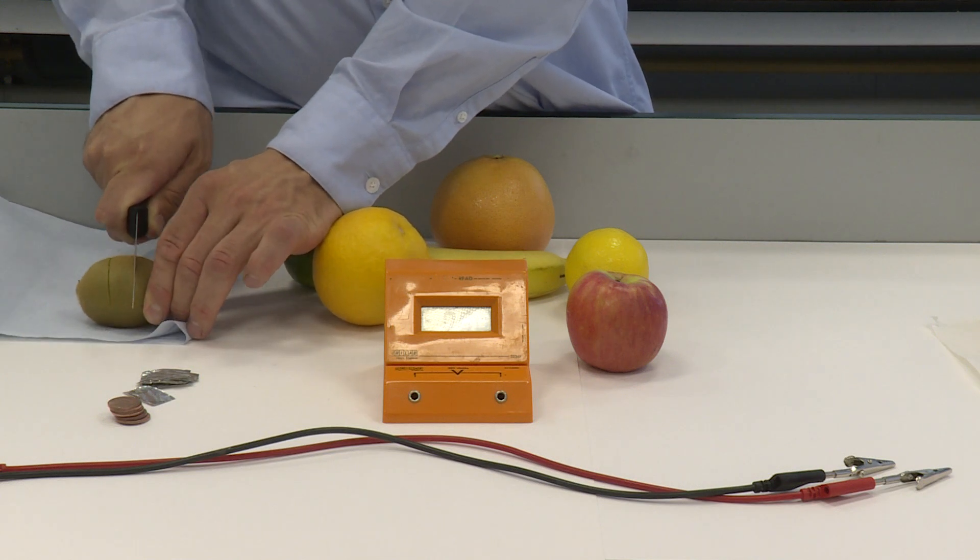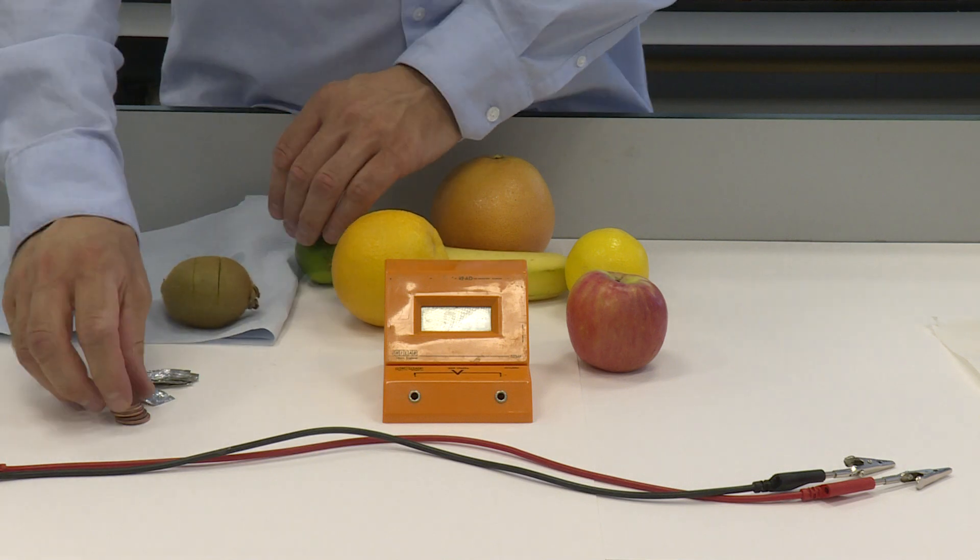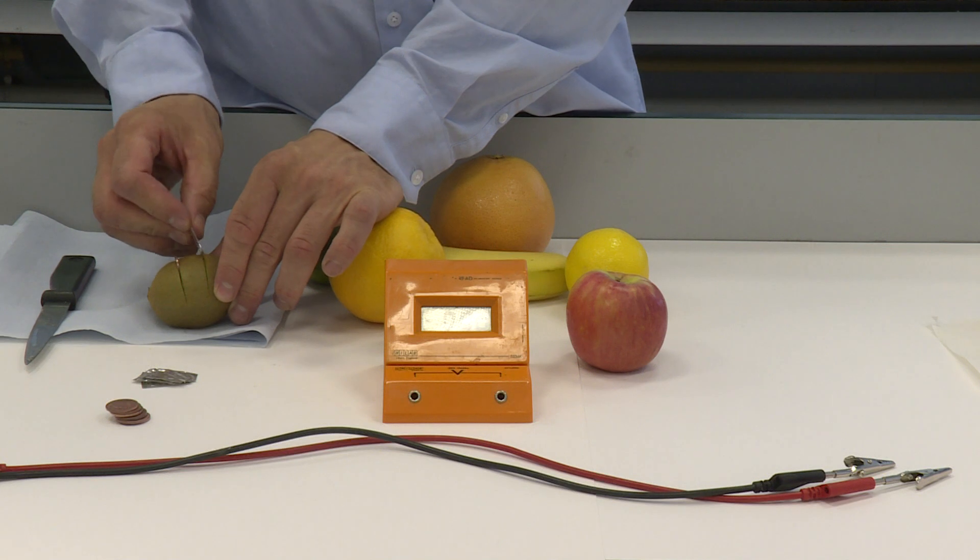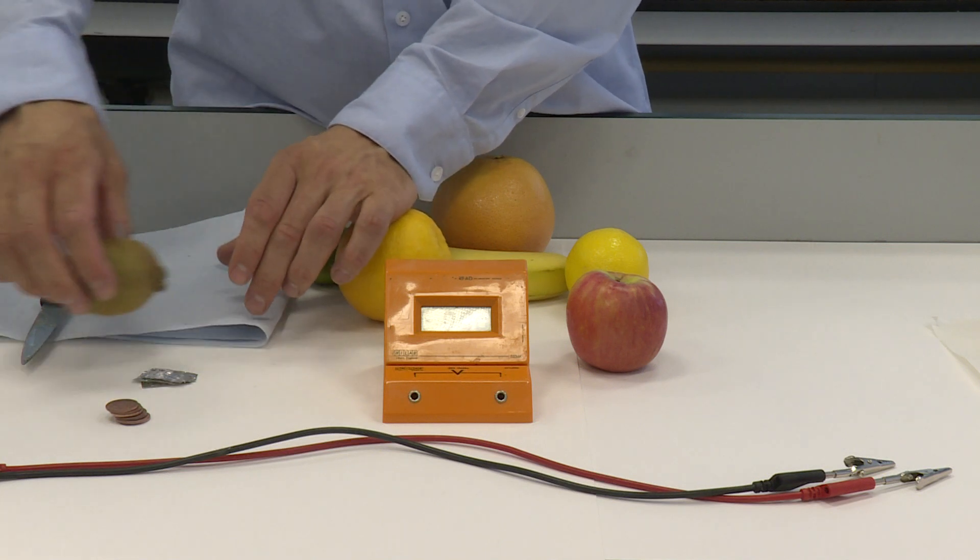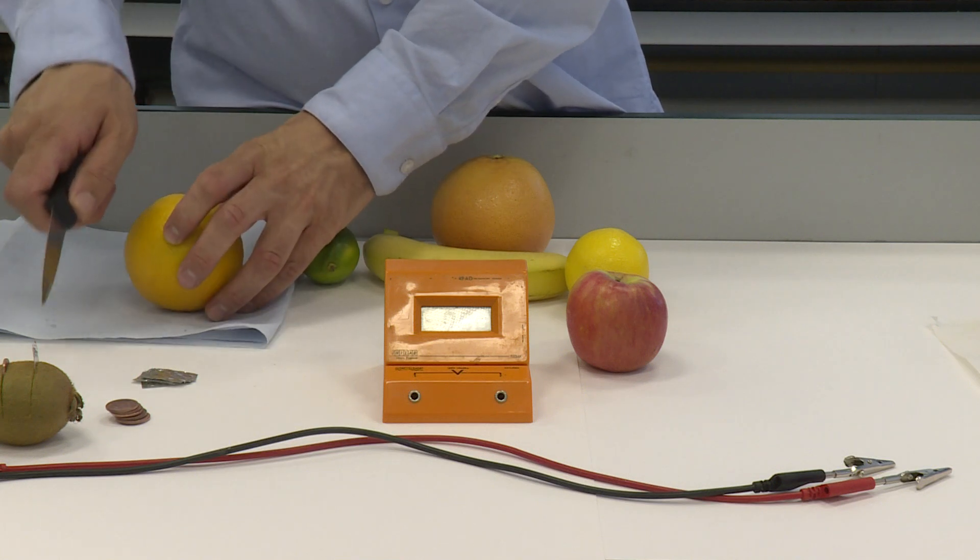We then take a coin and a piece of aluminum foil and we put it into the fruit. That one is now prepared and we'll continue with the remainder. So that's a kiwi fruit.